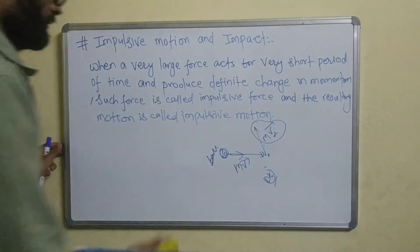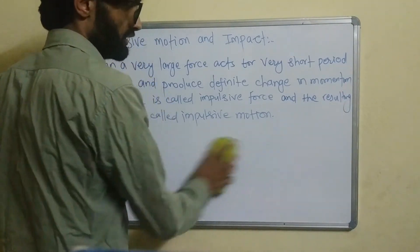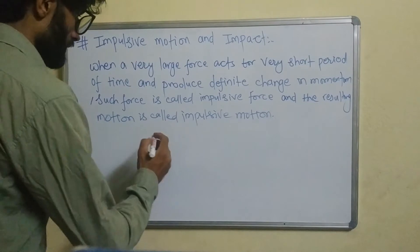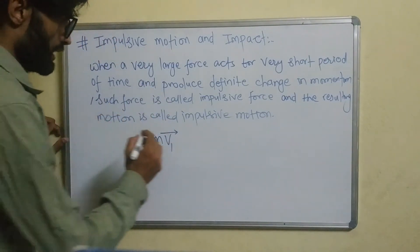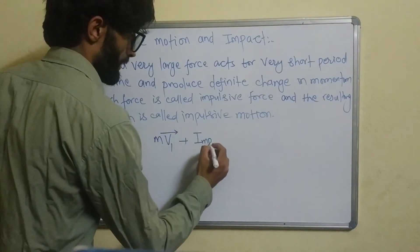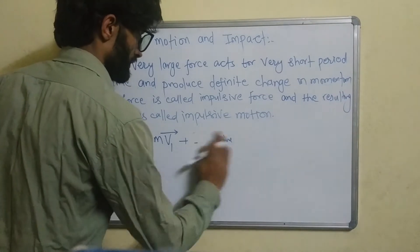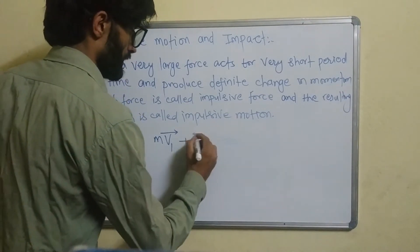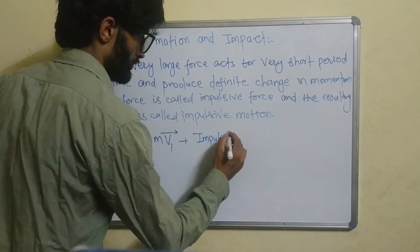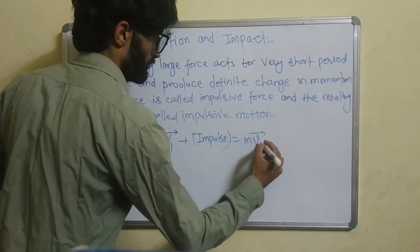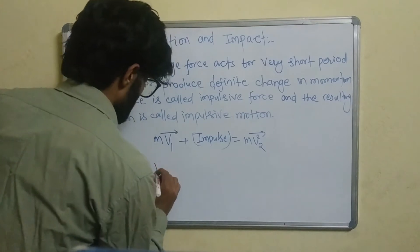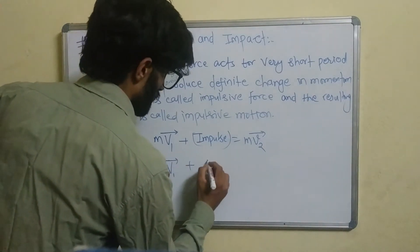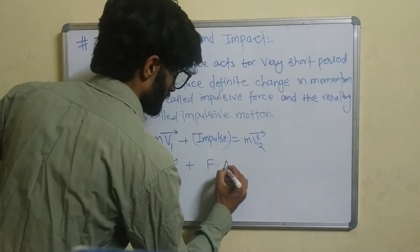The Impulse Momentum Principle states: mv1 plus impulse is equal to mv2. The impulse is force multiplied by delta time — force into delta time.